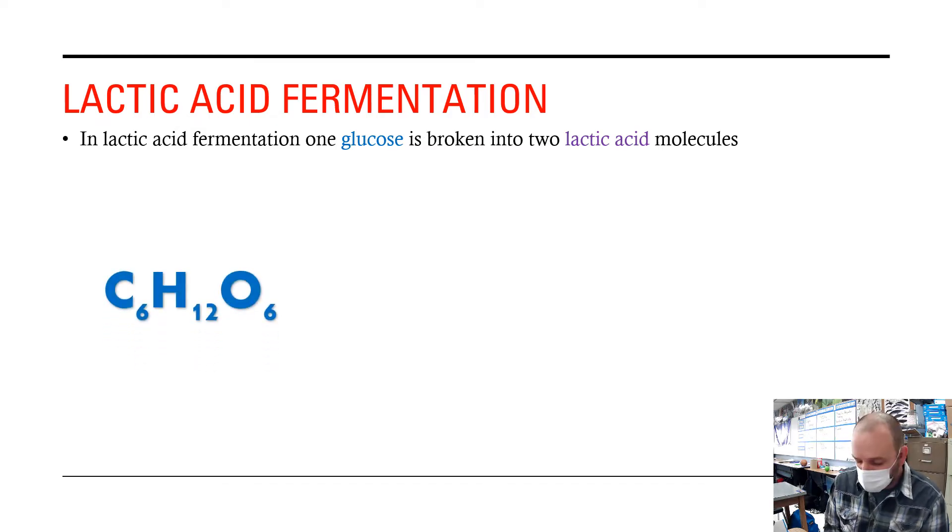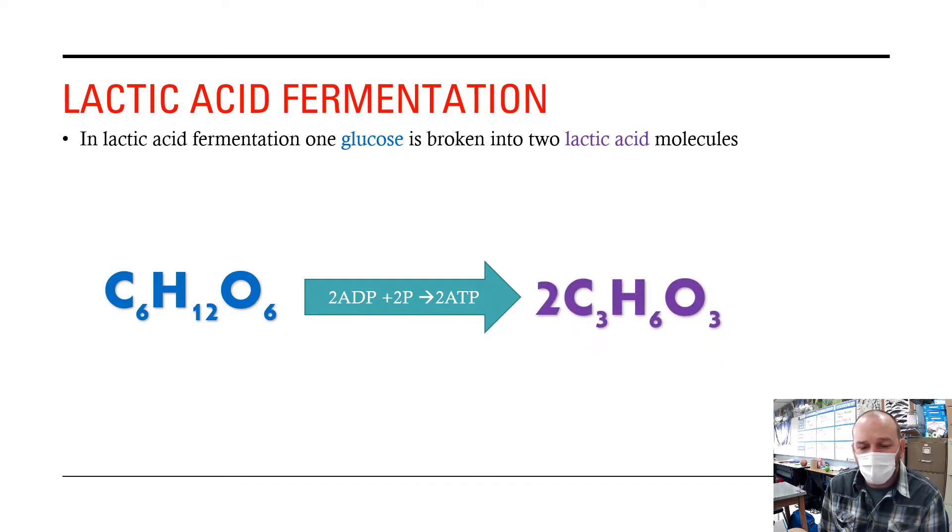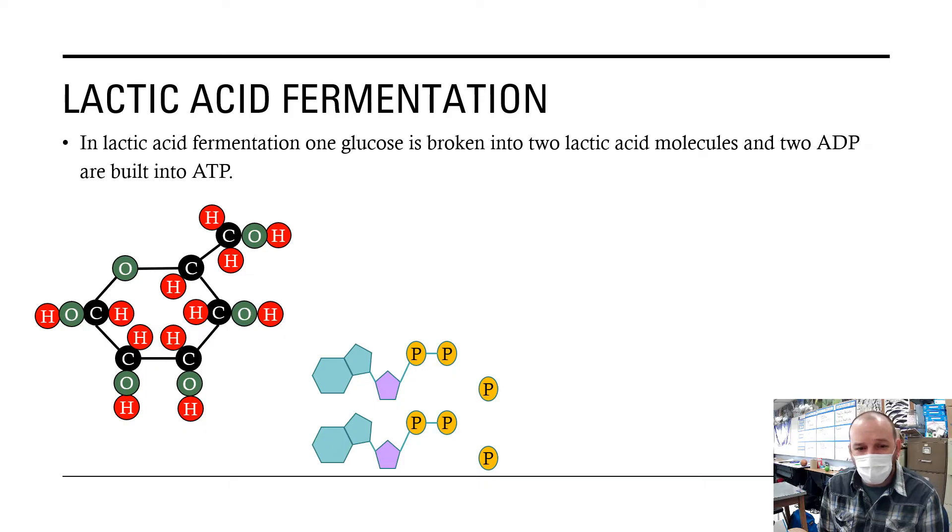In lactic acid fermentation, we start with glucose, two adenosine diphosphates and two phosphates, and they turn into two ATP and two lactic acids. You're going to model this process here.